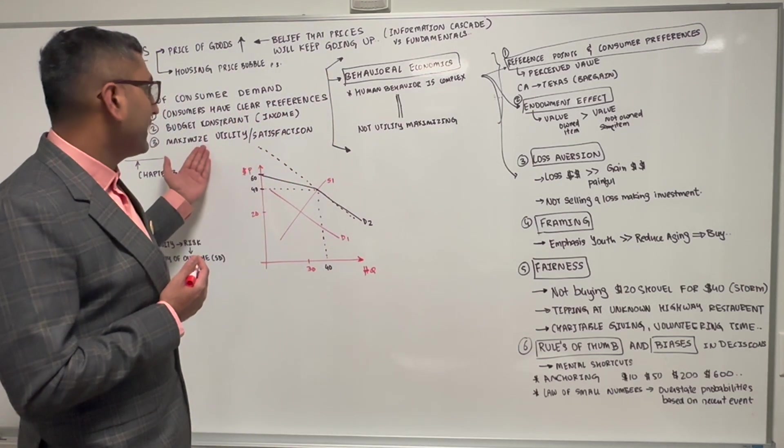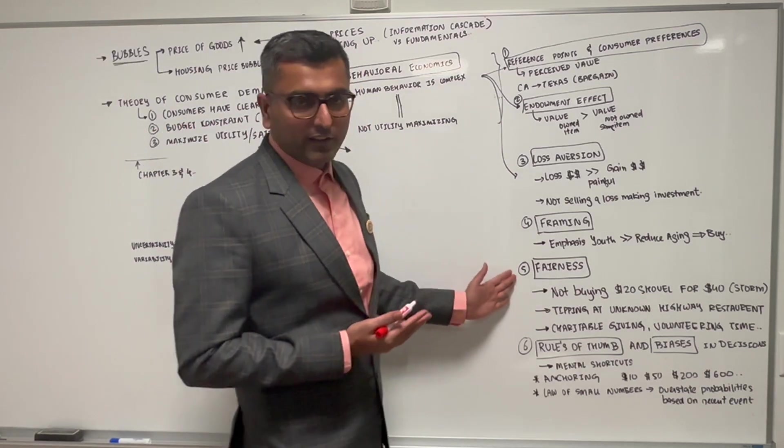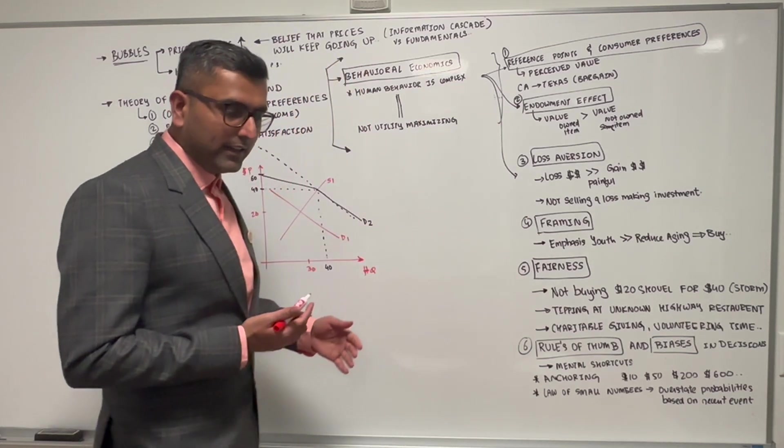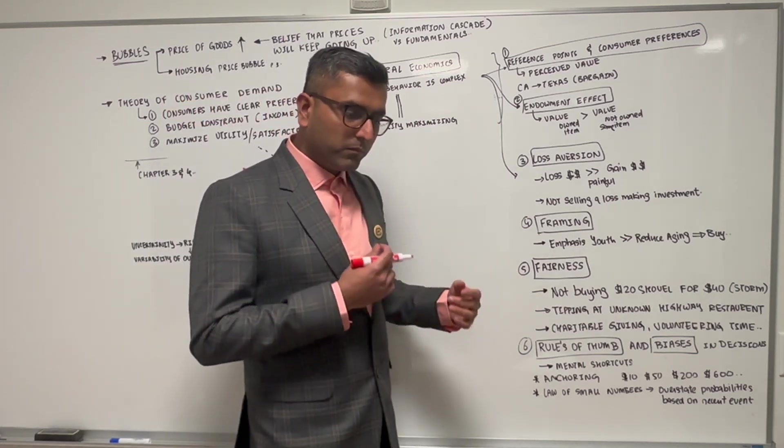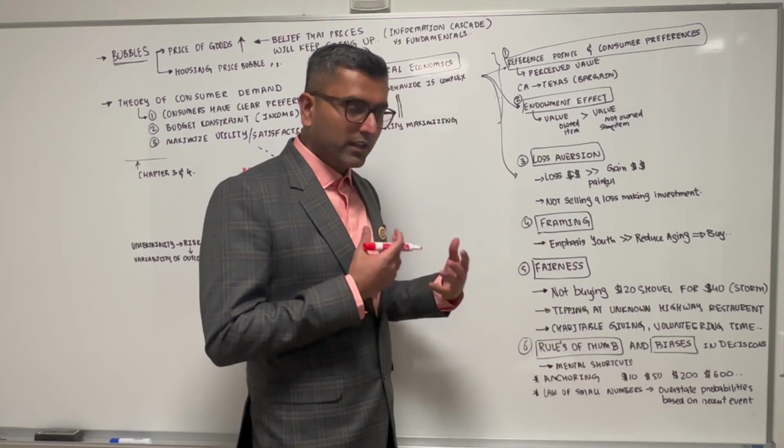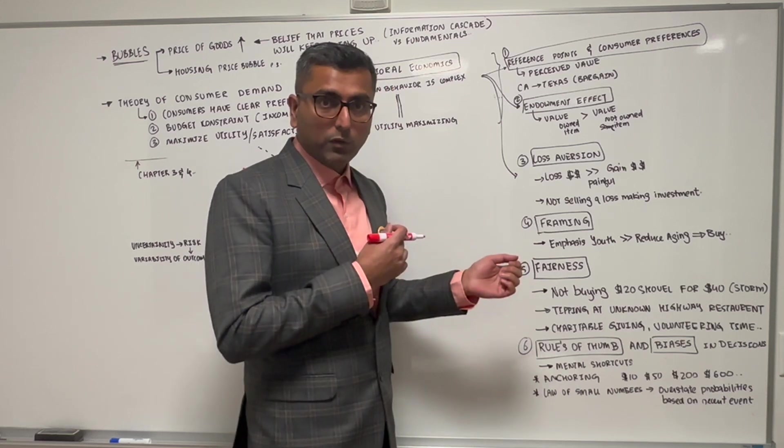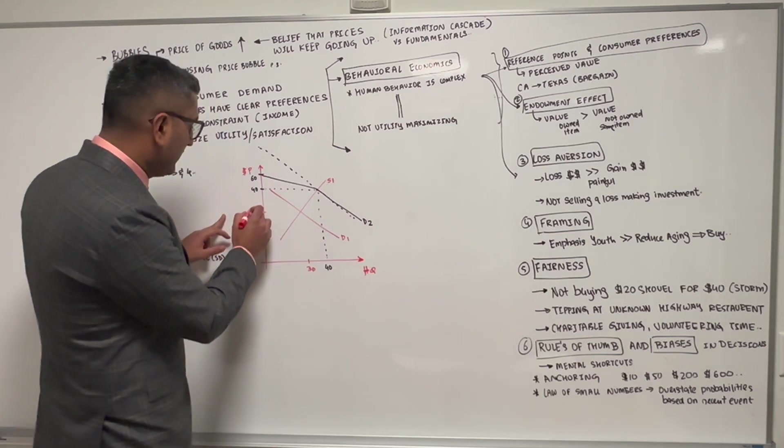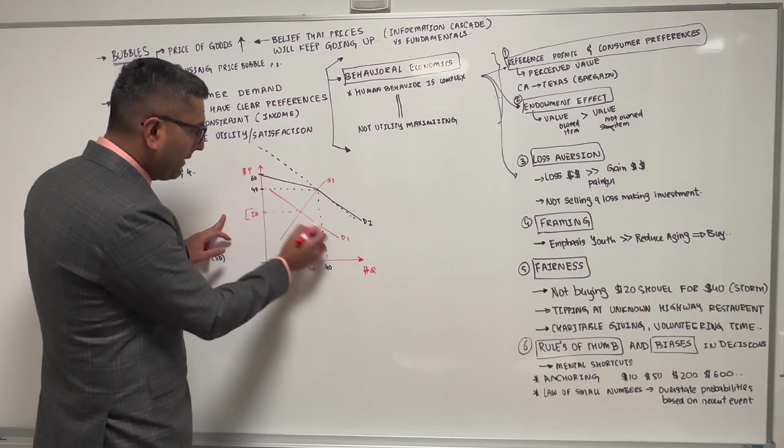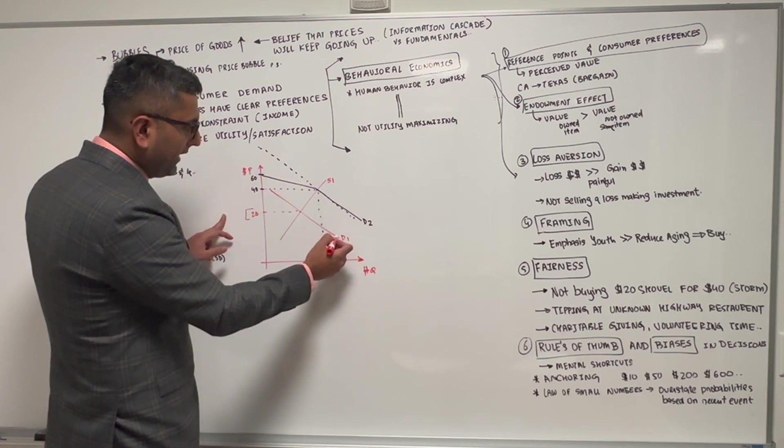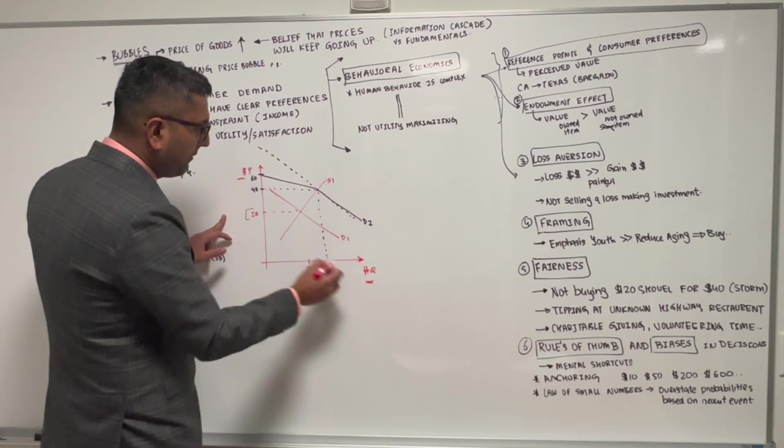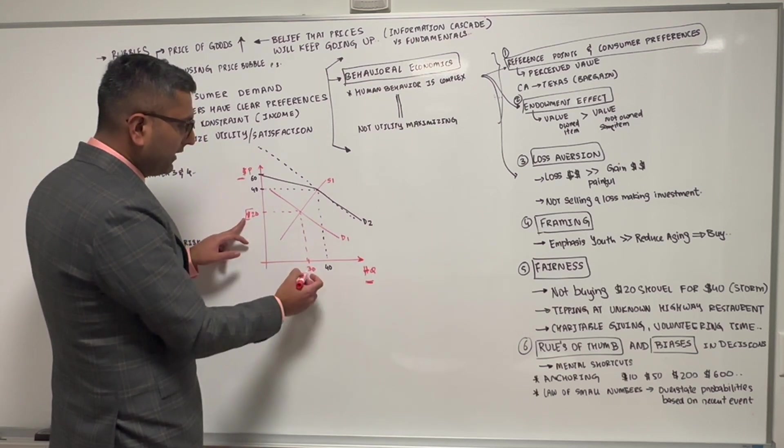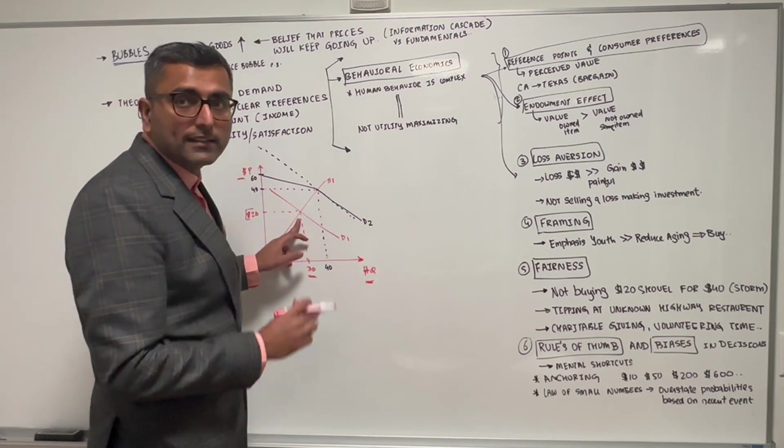Let's start with fairness. If you're in the market to buy a shovel to take the snow out, and typically that shovel costs $20, that's the equilibrium price. For a given price you have quantity demanded, and the equilibrium is at $20 selling 30 units.